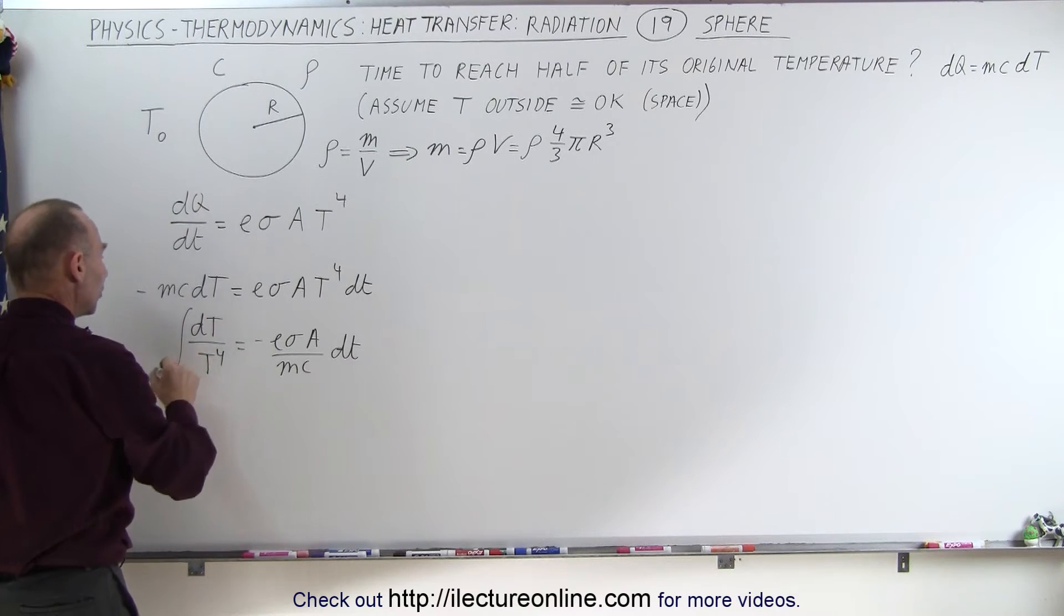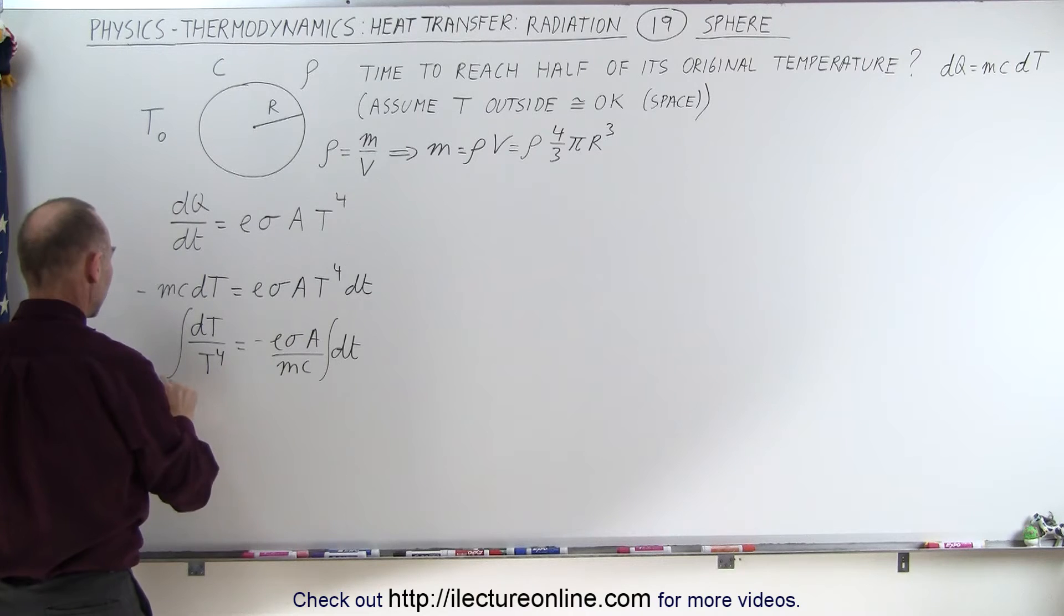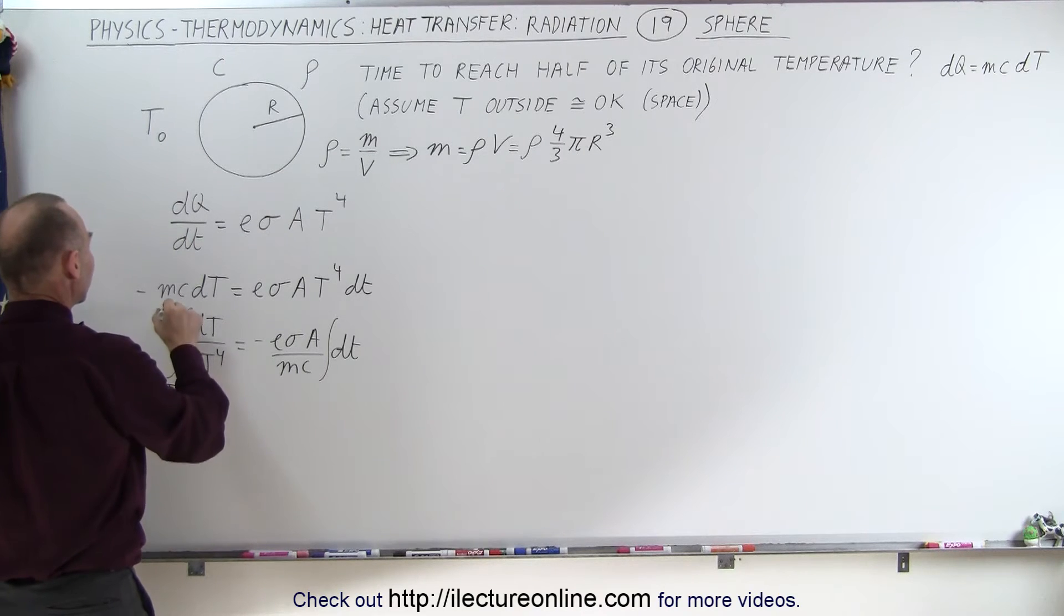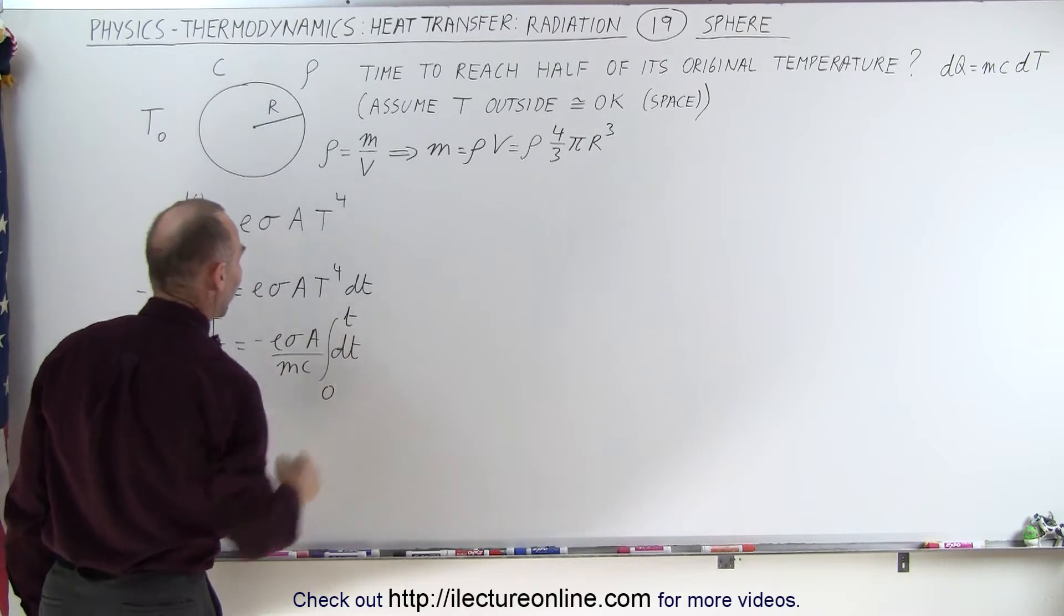We're now able to integrate both sides of the equation. The left side will be integrated from the initial temperature T sub naught to the final temperature which is T sub naught divided by two, and here from zero to the elapsed time t.